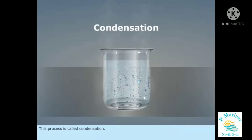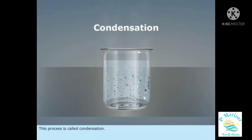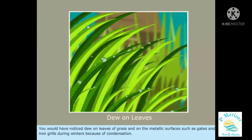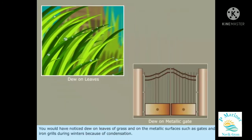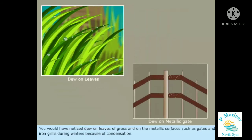This process is called condensation. You would have noticed dew on the leaves of grass and on the metallic surfaces, such as gates and iron grills during winters, because of condensation.